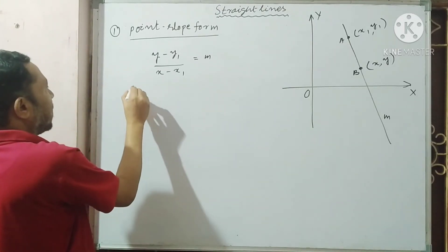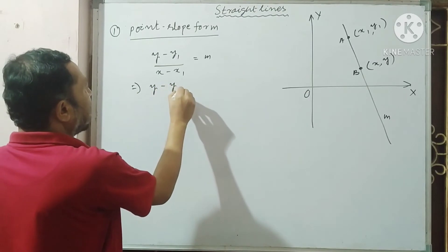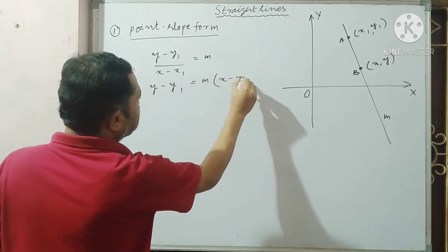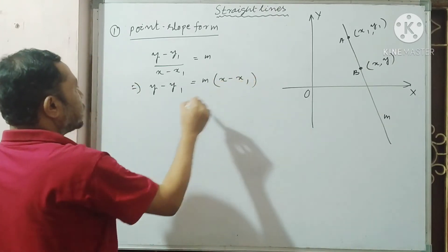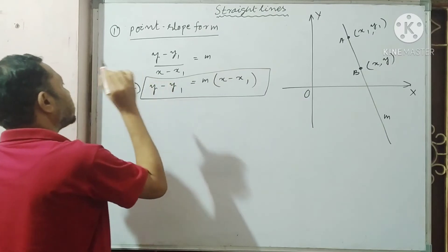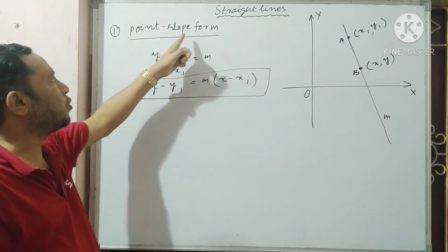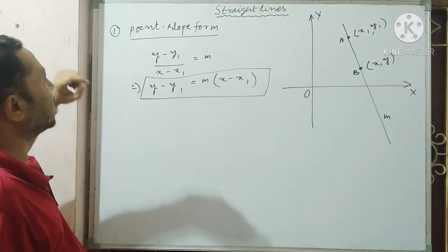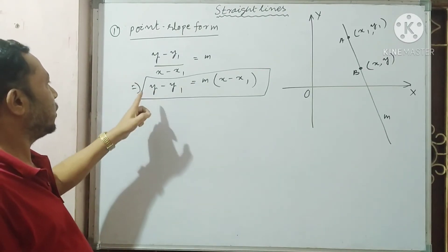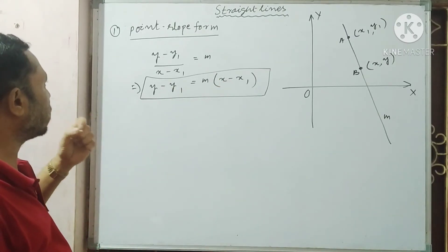This implies y - y1 = m(x - x1). This equation, or this form, is the equation of the straight line in point-slope form. That means, if a point is given and the slope is given, using this equation we can find out the locus of it.